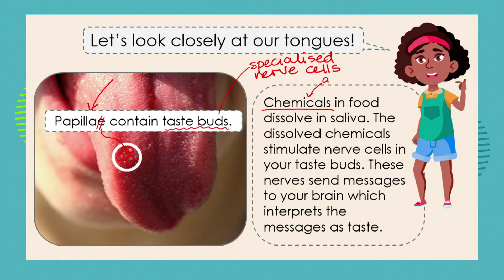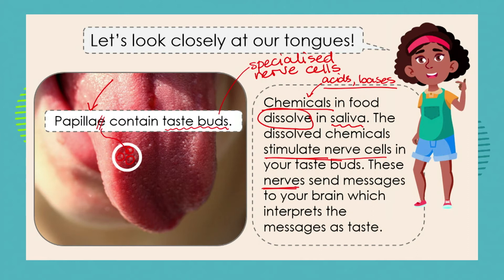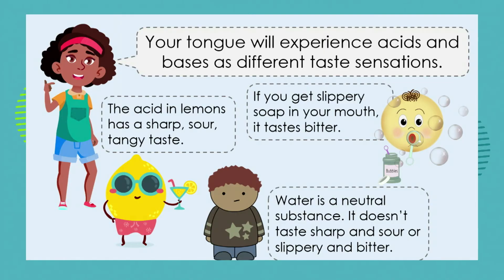Our brain does calculations and interpretations, and we come out with sensations like vision, touch, hearing, and of course taste. How does taste happen? Chemicals in our food — remember we're looking at chemical characteristics, so it could be acids and bases — these chemicals dissolve in the saliva inside your mouth. The dissolved chemicals stimulate the nerve cells in the taste buds, causing them to react depending on whether they're acidic or basic. These nerves then send the message to your brain, which interprets those messages as the sensation of taste.